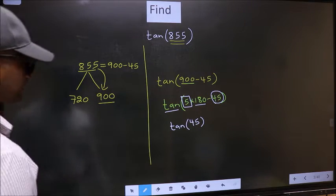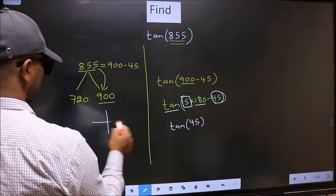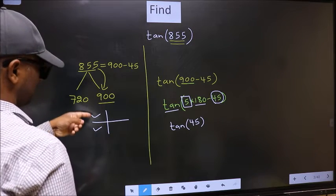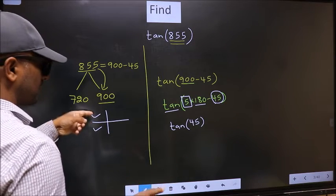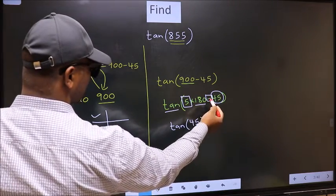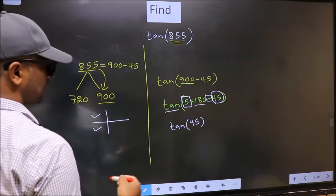And all the odd multiples of 180 lie either in the second or in the third quadrant. So now to select the quadrant, we should look at this symbol. Here we have negative. That means angle lies in the second quadrant.